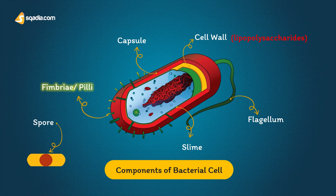Flagella allow organisms to find sources of nutrition and penetrate host mucus. The number and position of flagella may help identification. Slime is a polysaccharide material secreted by some bacteria that protects the organism against an immune response and eradication by antibiotics when it is growing in a biofilm in a patient with bronchiectasis or on an inserted medical device.